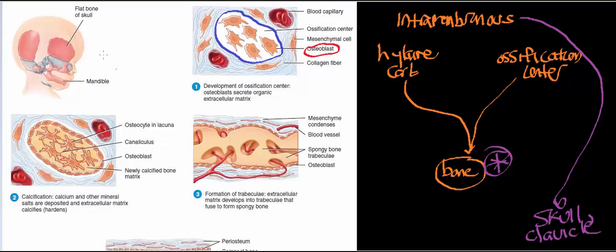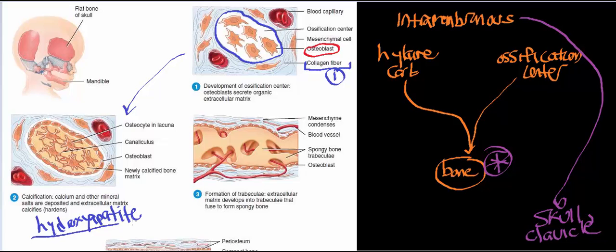Once we get the ossification center, step two involves osteoblasts secreting the organic extracellular matrix — the formation of collagen fibers. Then in step two, we get calcification: the osteoblasts produce hydroxyapatite, which is the calcified component of bone. The osteoblasts secrete more and more hydroxyapatite as the process progresses.